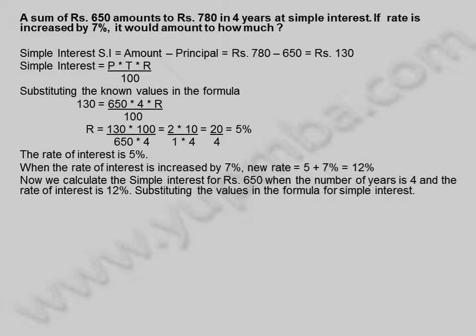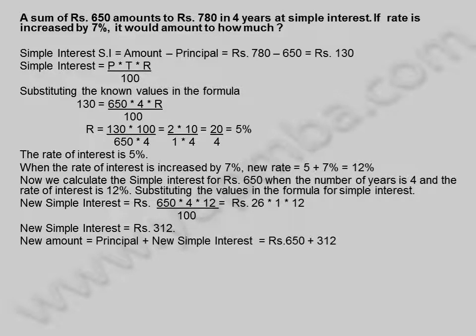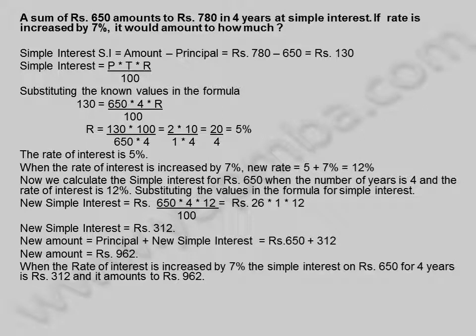When the rate of interest is increased by 7%, the new rate equals 5 plus 7, which is 12%. Now we calculate the simple interest for 650 rupees when the number of years is 4 and the rate of interest is 12%. New simple interest equals 650 into 4 into 12 divided by 100, equal to 312 rupees. New amount equals 650 plus 312 rupees, equal to 962 rupees.